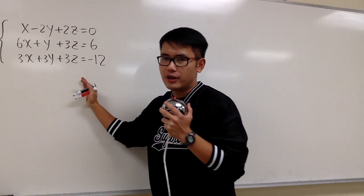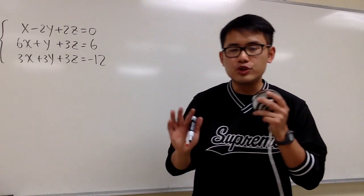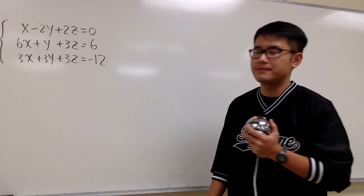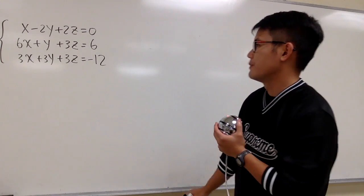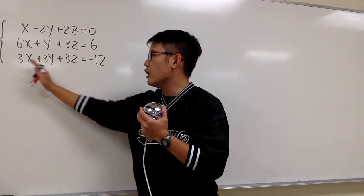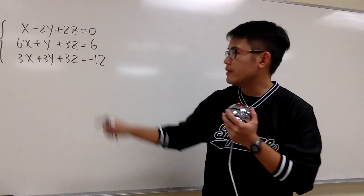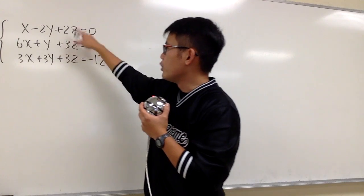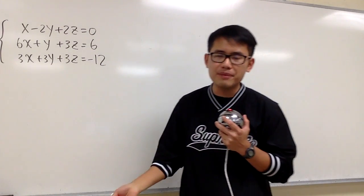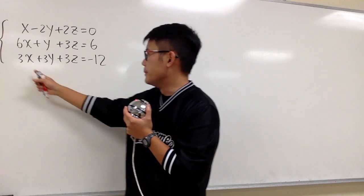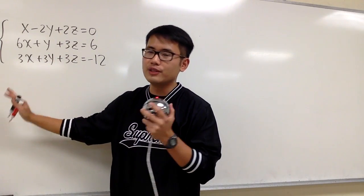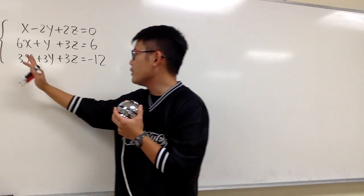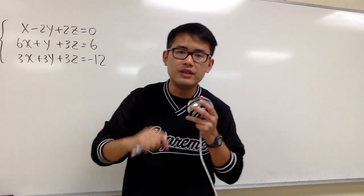We will be using the elimination method right here. The main thing I want to show you in this video is how we should organize our work. First, we have to think about which of these variables to eliminate — x, y, or z. You should check the numbers in front of each variable. They are about the same. Therefore, let's say I want to eliminate x. You can also do it with y or z — you can try that on your own — but in this video, let's focus on getting rid of x first.